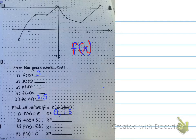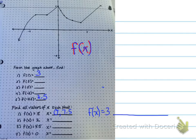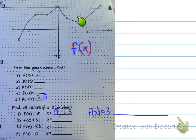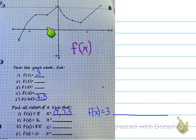Now let's try something a little bit harder. What happens if I ask you to find f(x) when the y is, say, 3 — what are the x values? When y is 3, what are the x values? So we're going to look at the graph again. When y is 3, we have this one, we have this one, and if you look way before that, we have one that's all the way across here.